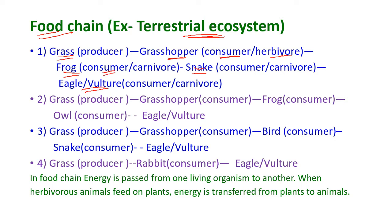The frog is also known as a carnivore because it eats animals. Plant eaters are known as herbivores and animal eaters are known as carnivores. Snake eats frog, so it is a consumer and also a carnivore. Eagle or vultures eat snakes, so they are consumers and also carnivores because they eat animals.